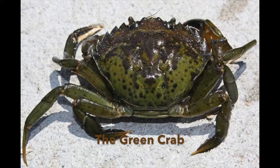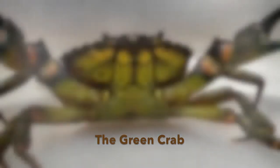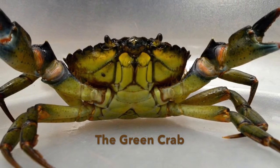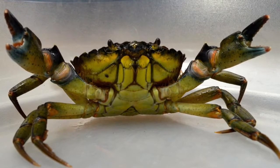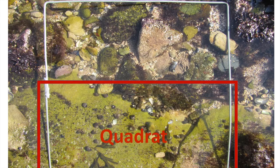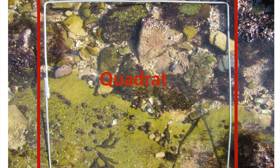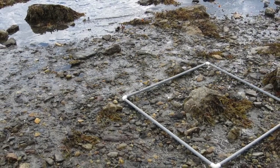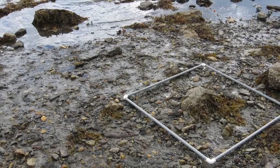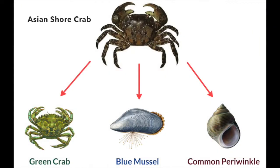The Asian shore crab is not only decimating its prey species, it is also affecting the population of other predator species. The green crab is not native to New England, but has lived in the area for roughly 200 years and has been greatly impacted by the introduction of the Asian shore crab. A 2015 study used quadruple sampling to track population density levels of the Asian shore crab and three other native invertebrate species that share the same habitat. The research found that the population density of the Asian shore crab increased over time, while the densities of the blue mussel and green crab both declined.